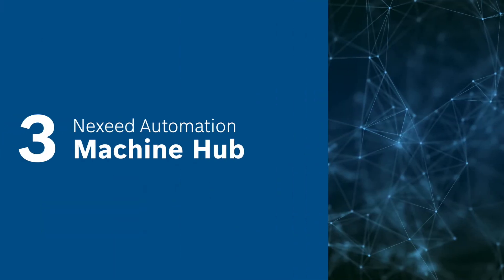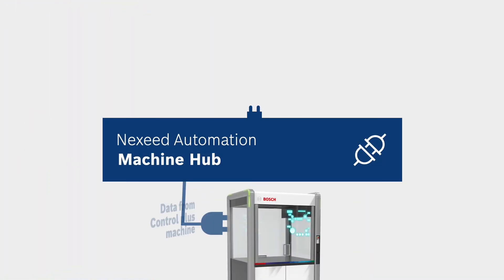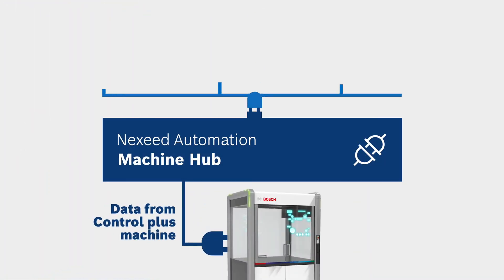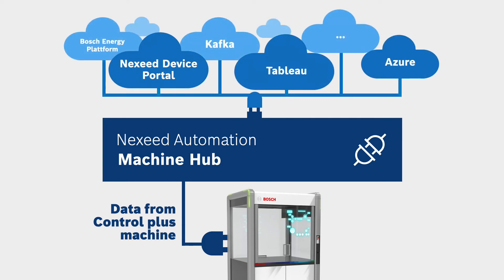In version 2 we also made a huge leap forward in connectivity with Control Plus Machine Hub. With Machine Hub we provide a simple connection of Control Plus machines into other IT systems used in the production environment like Azure, Tableau or the Bosch Energy platform. Machine Hub concentrates on non-real-time connections. Our real-time NexSeed MES connection will not be affected by Machine Hub and remains as it is today.